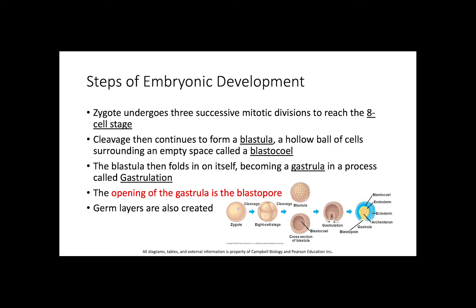The steps of embryonic development: a zygote undergoes three successive mitotic divisions to form the 8-cell stage, and this process is called cleavage. Cleavage then continues to form a blastula, which is a hollow ball of cells surrounding an empty space called a blastocele. The blastula then folds in on itself, becoming a gastrula in the process called gastrulation.